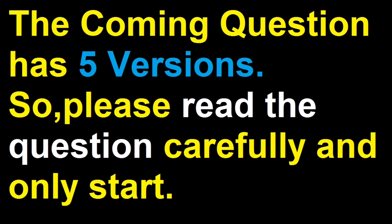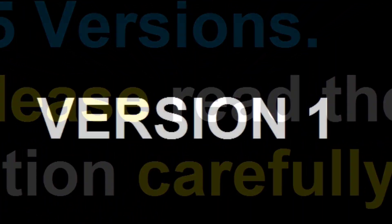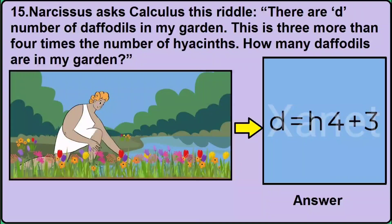Now the last question, question number 15, has got 5 different versions or types. You need to read the question only and click the option I have shown — do not try to watch the image as the image is similar but only the question is different. For example in version 1, it is asked: 'this is 3 more than 4 times the number of hyacinths — how many daffodils are in my garden?' Then the correct answer will be D = 4H + 3.